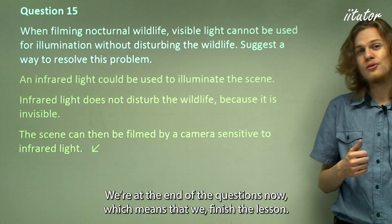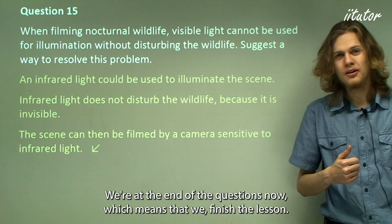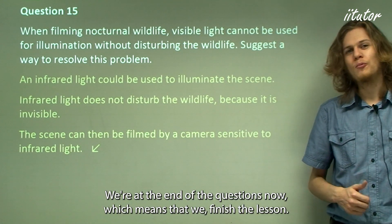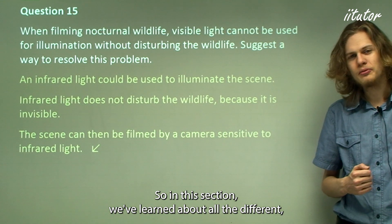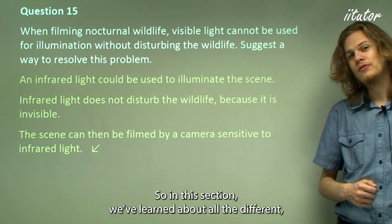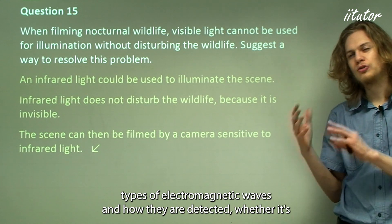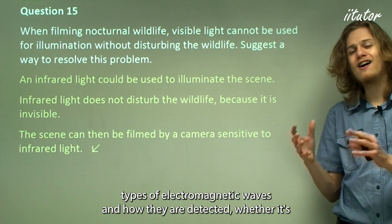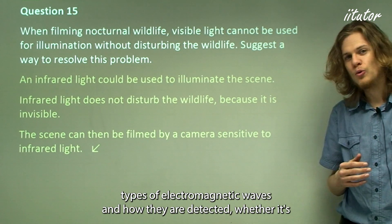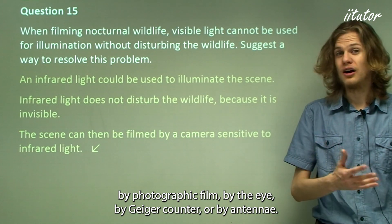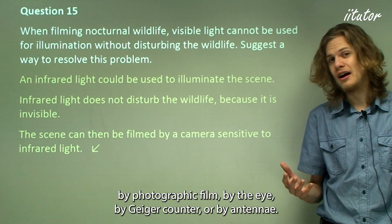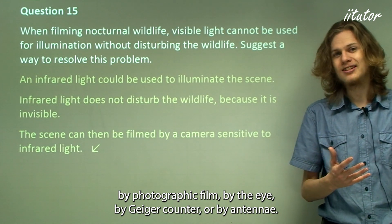We're at the end of the questions, which means we've finished the lesson. In this section we've learned about all the different types of electromagnetic waves and how they are detected — whether by photographic film, by the eye, by a Geiger counter, or by antennae.